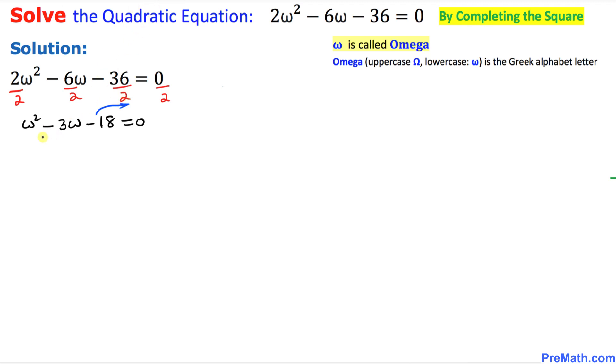We want to make sure that we have only ω² - 3ω on the left hand side. These variables must be on the left hand side.